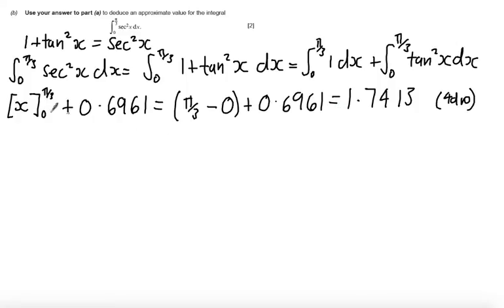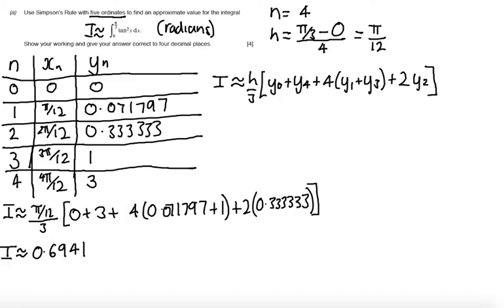So let's have a look and see how the marks are awarded on this question. There are standalone marks for getting the table values. Once you get three values right, you get one standalone mark. Once you get five values correct, you get two standalone marks. There is a method mark at this stage for getting the correct value for h, which of course you must have had for the table, and using the correct form of Simpson's rule. And then finally there is an answer mark for getting the correct answer of 0.6941.